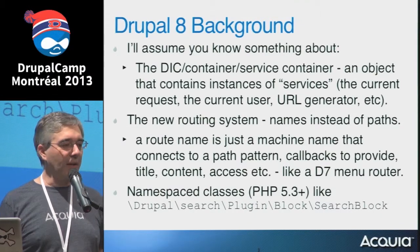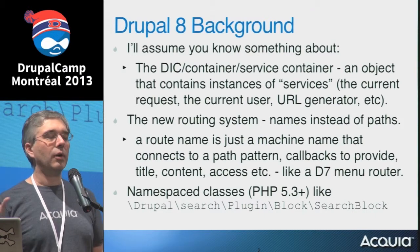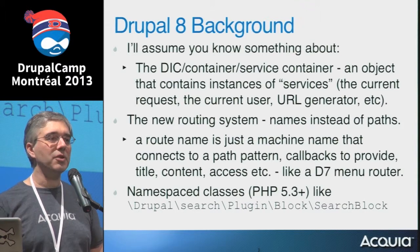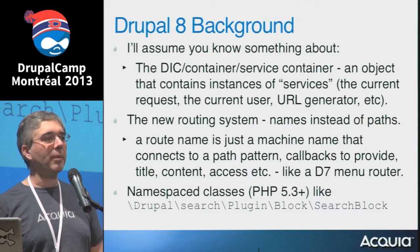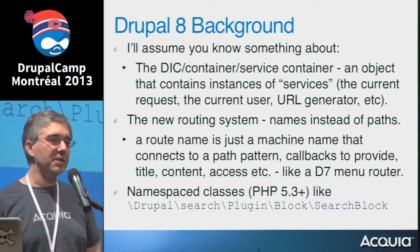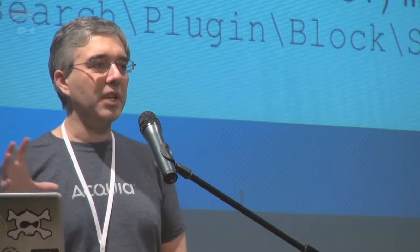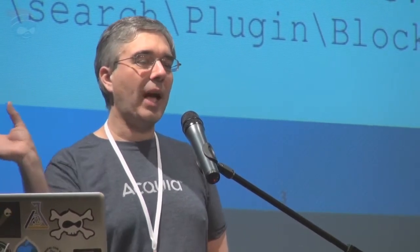As an example, we can now have two different routes — two different machine names, two different page callbacks for the same path. Why would you want that? Think about web services. Drupal 8 is supposed to be a good web service platform. If you're asking for JSON content versus HTML content, you don't want to route that through the same code path. Now you can say: here's the path like node/1, and based on the headers, deliver the JSON representation or the HTML representation — essentially providing a different page callback depending on what format you want.